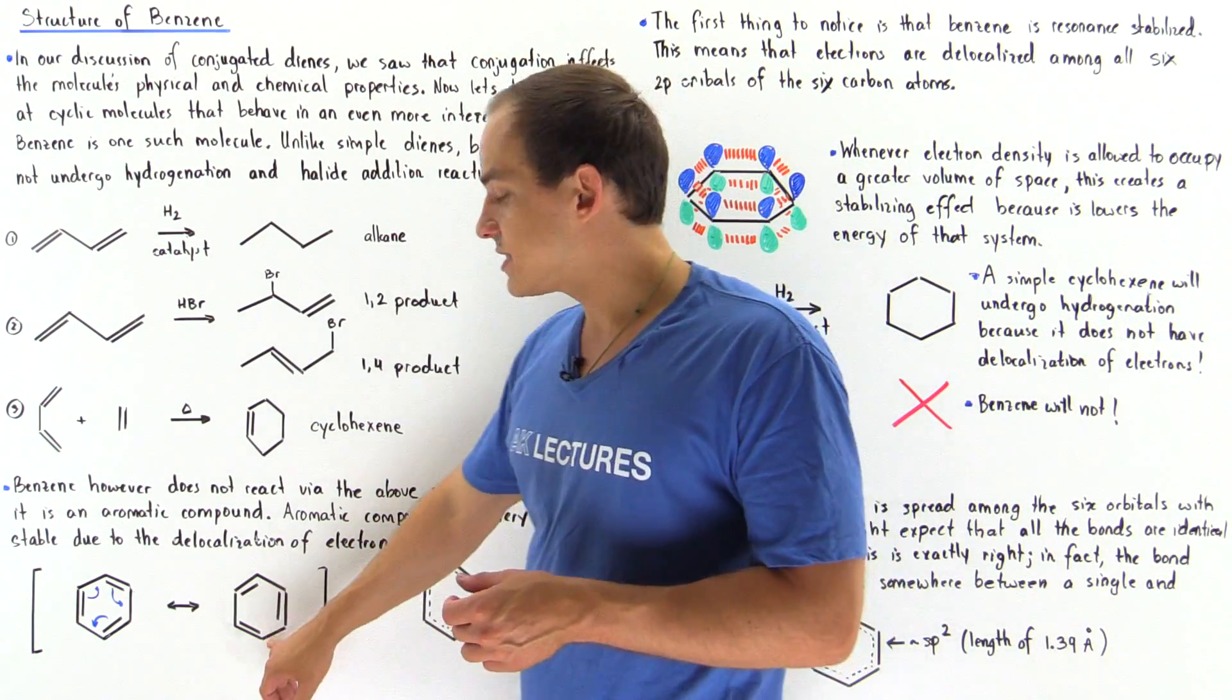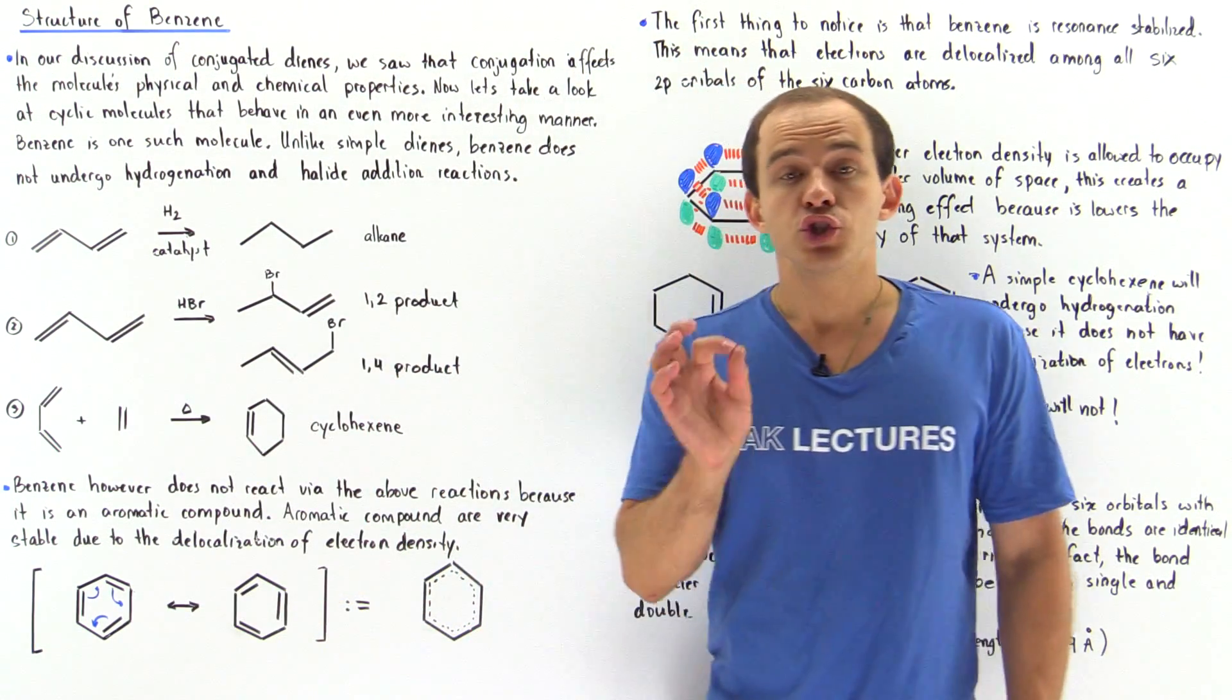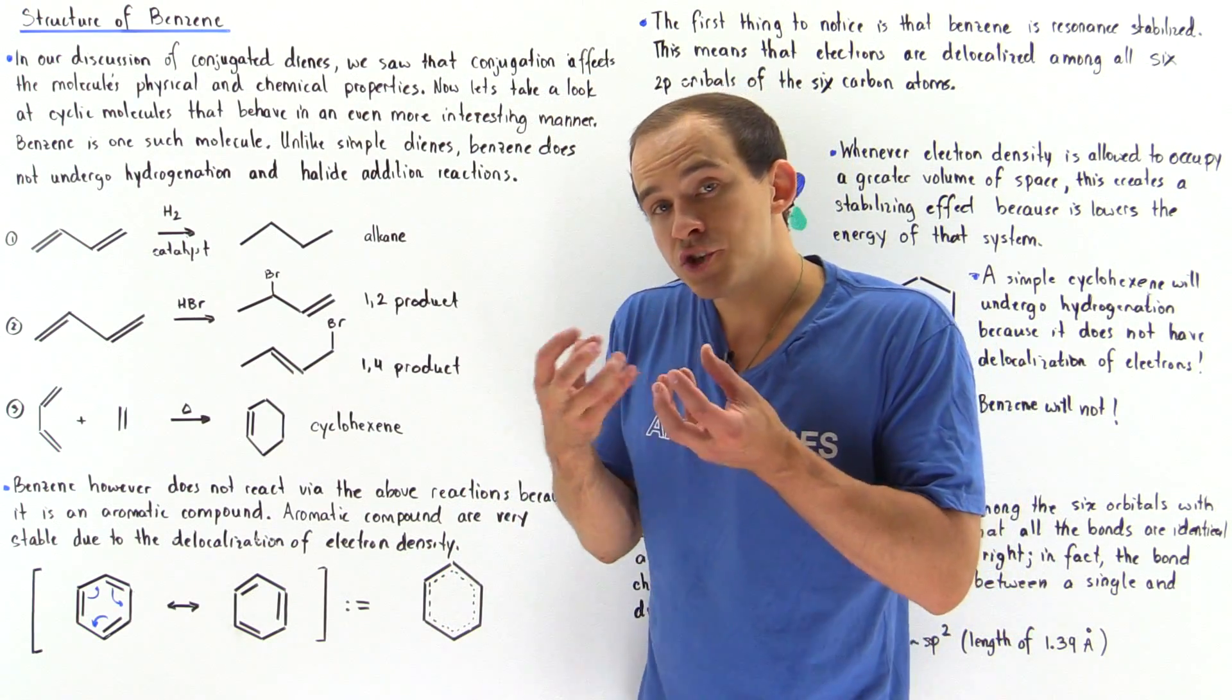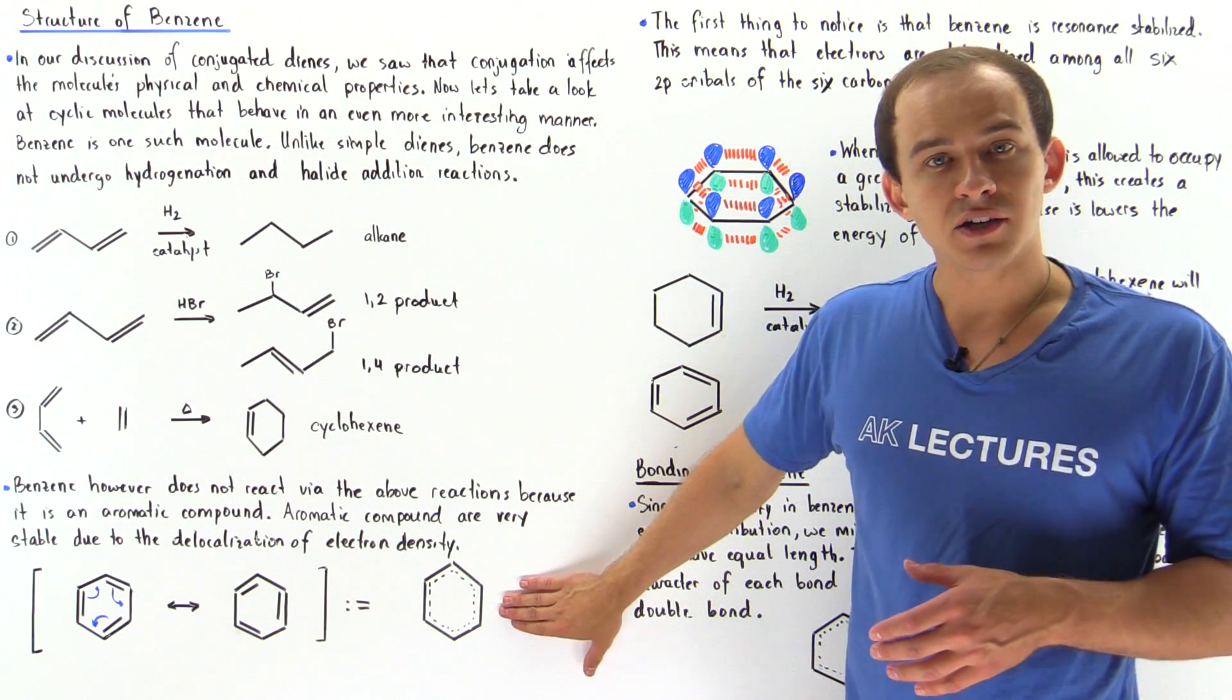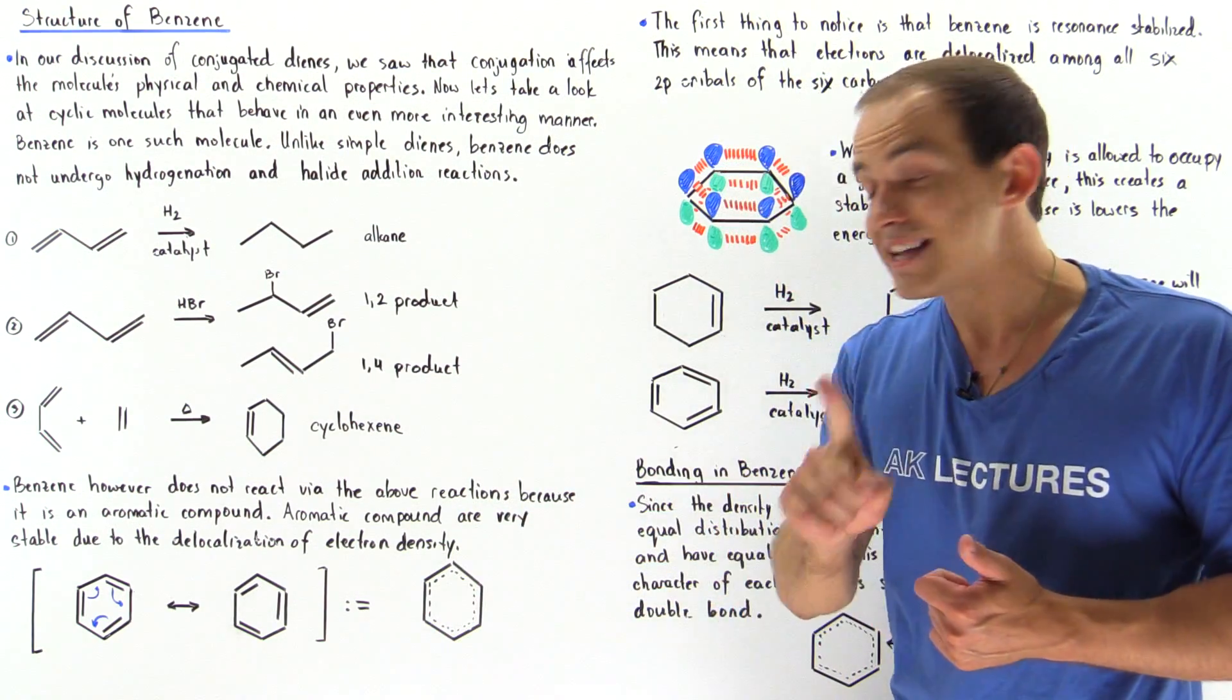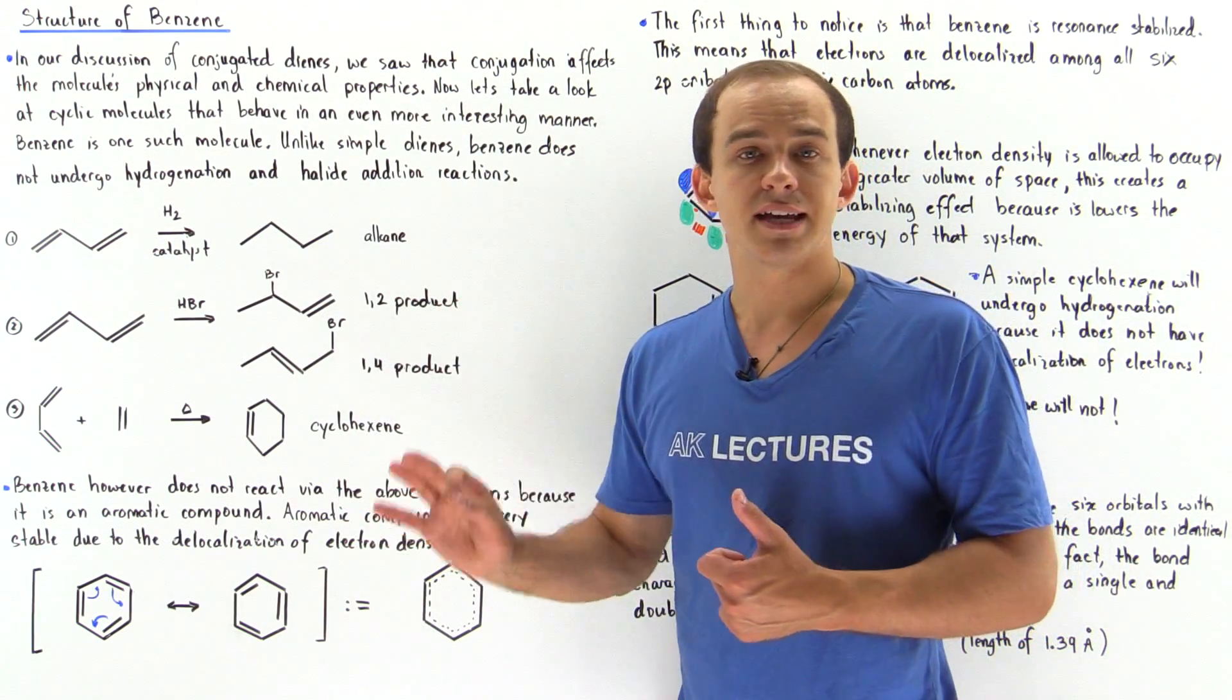So benzene looks something like this. So we basically have a cyclic six-membered ring that has three pi bonds as shown. And it has two major resonant structures. So this is one of those resonant structures and this is the second one. And actually, the intermediate molecule, what benzene actually looks like, is the following molecule. We can also actually signify benzene with a six-membered ring and by drawing a circle in between. And that circle simply means, as does this dashed line, that all the electrons are basically delocalized among all these six carbon atoms.